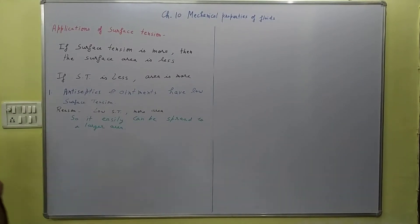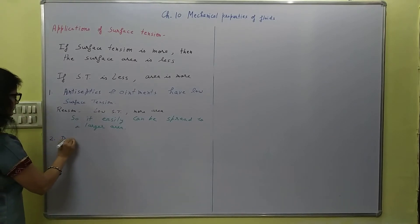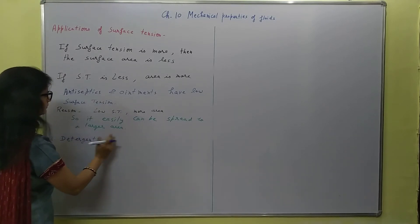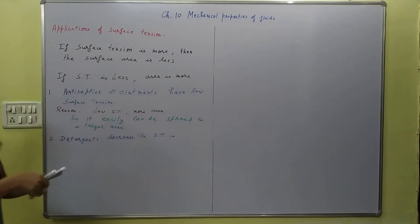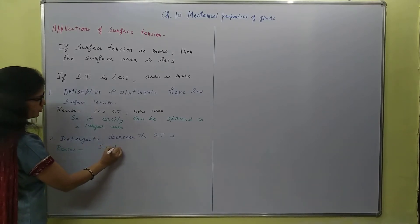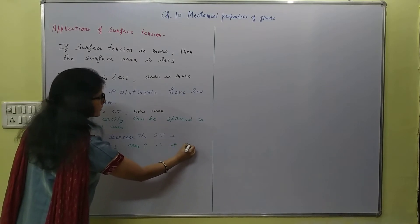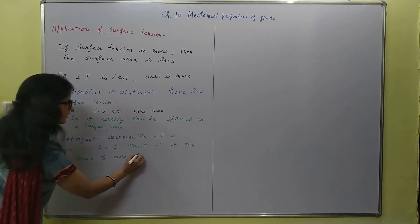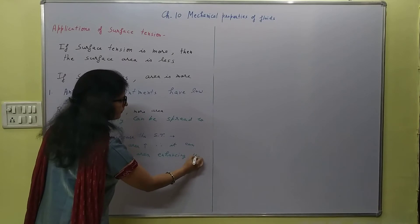Second: detergents decrease the surface tension of the detergent solution when added to water. The use is that surface tension is low, which means area is more. Therefore it can spread to more area, enhancing the cleansing action.